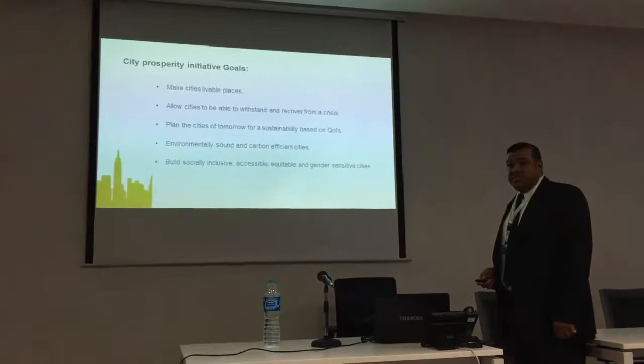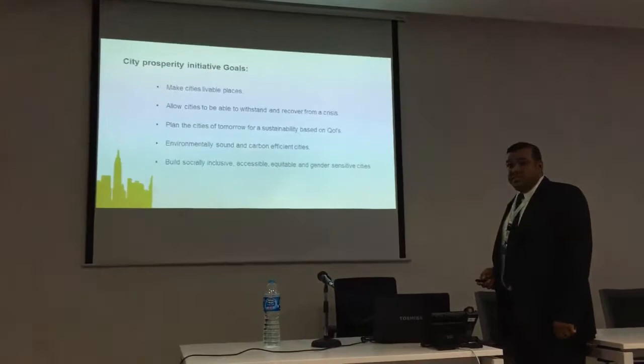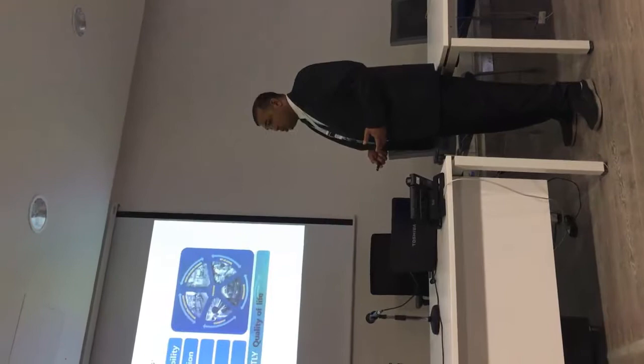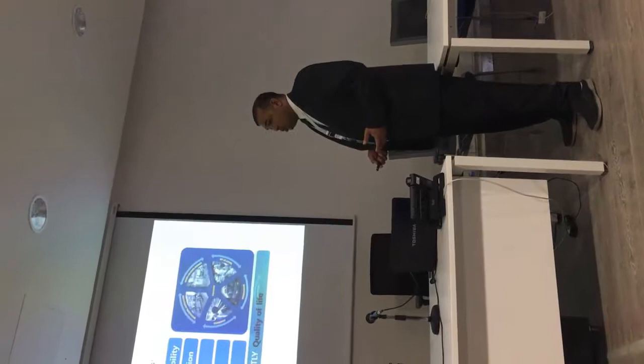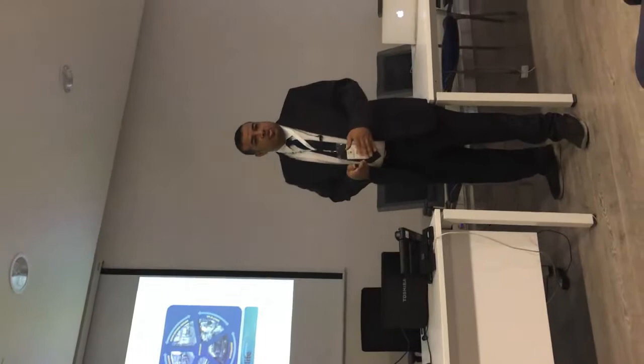The city prosperity index consists of six main dimensions: environmental sustainability, equity and social inclusion, infrastructure, productivity, and lately they added legalization — and most importantly, quality of life. Quality of life has a lot of values and indicators which we will zoom in on later on.